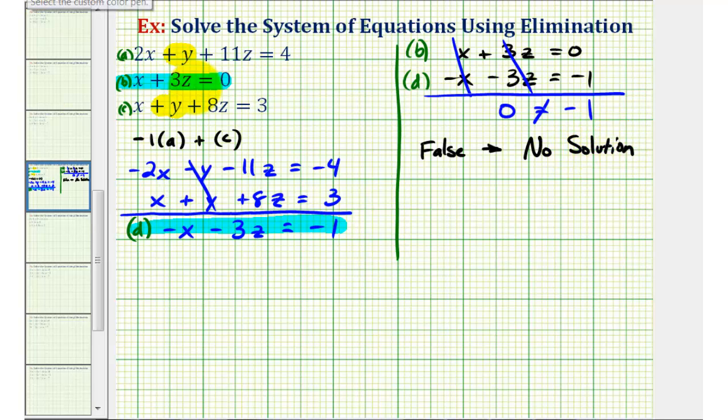Therefore, we can say we have an inconsistent system, which means if we graph these three planes in space, there will not be any points that are on all three planes. So let's go ahead and take a look at the graph of this.